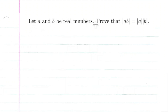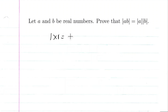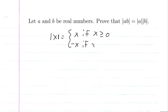Let a and b be real numbers. We're going to prove that the absolute value of a times b is equal to the absolute value of a times the absolute value of b. As a refresher, we know the absolute value of x is equal to x if x is greater than or equal to zero, and it's equal to negative x if x is less than zero.